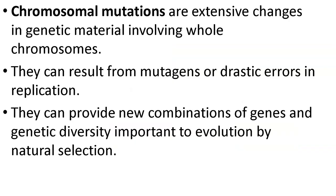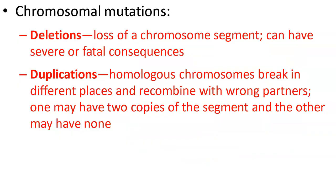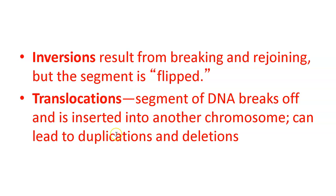Chromosomal mutations involve genetic material at the level of whole chromosomes. You can lose a segment — deletion. You can translocate a segment from one chromosome to another. You can duplicate a segment, which would lead to differing amounts of protein. And then inversion — you can invert a segment of a chromosome. For your notes packet: chromosomal mutations can be deletions (loss), duplications (breaks in different places that recombine with wrong partners), inversions, and translocations. Here's another picture showing the different types of chromosomal mutations.